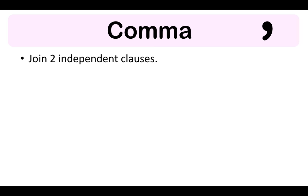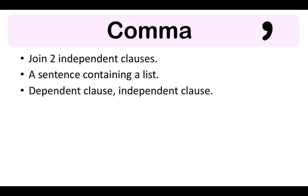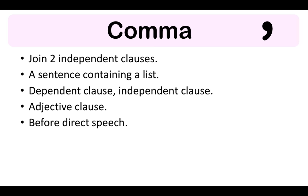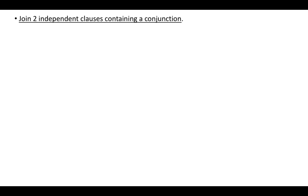A comma can be used to join two independent clauses. A comma can also be used in a sentence containing a list, when the dependent clause comes before the independent clause, a comma is used to separate the two. A comma is also used in an adjective clause, before direct speech, and following a transition word. An example of a comma being used to join two independent clauses containing a conjunction is: 'Jasmine wanted to buy sweets, but she didn't have enough money.'